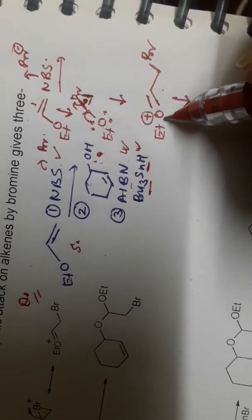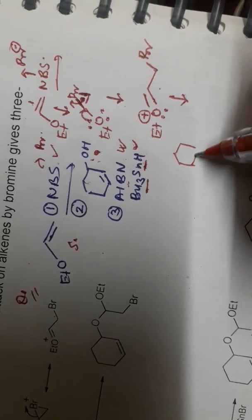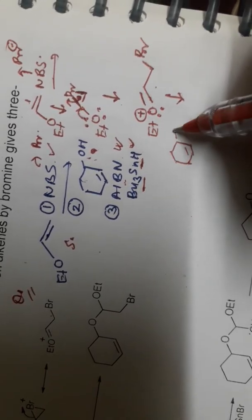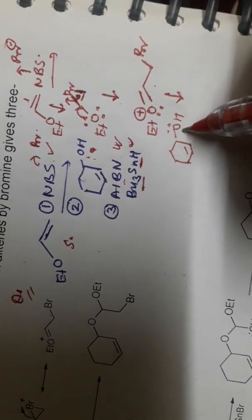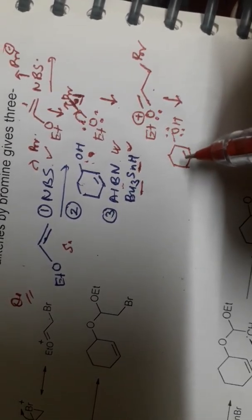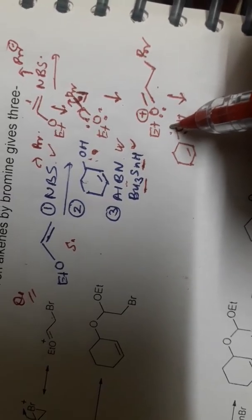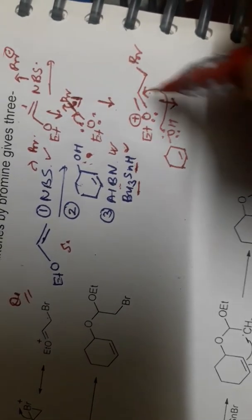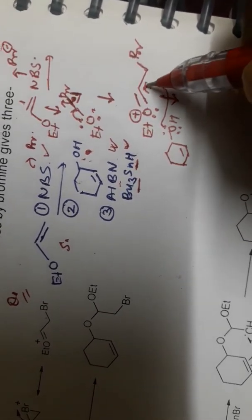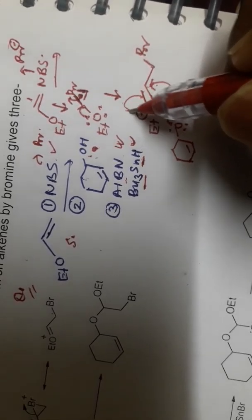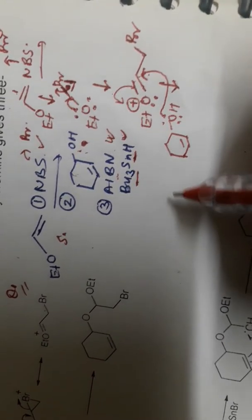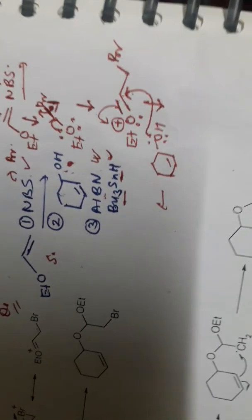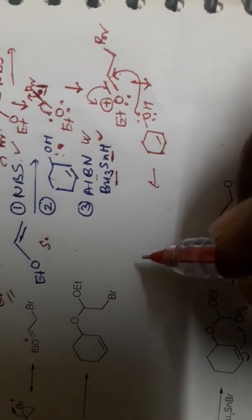At this stage the reaction is paused, and the second starting material is added. The lone pair of the alkene in the second starting material shifts into the reaction medium and the double bond shifts, stabilizing the positive charge.